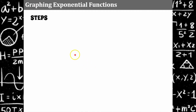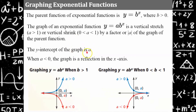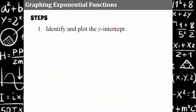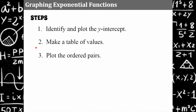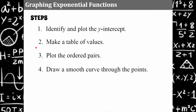Here are the steps to graphing an exponential function. Number one, identify and plot the y-intercept — the y-intercept is a, whatever factor comes before the base and exponent. For the parent function it's 1, but any other value of a is your y-intercept. Second, make a table of values. Then plot the ordered pairs from your table and draw a smooth curve through your points.